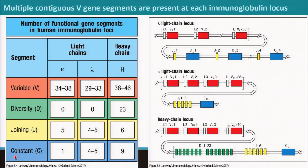The last class we discussed about the number of variable regions of kappa and lambda light chains and heavy chain. The diversity region is not present in the light chain — only present in heavy chain. The joining segment is in both the light chain and heavy chain. The constant domain varies: kappa chain has 1, lambda chain has 4 to 5, and heavy chain has 9. Though the constant domain does not take any part in receptor diversity, it is there for the effector functions of the antibody.